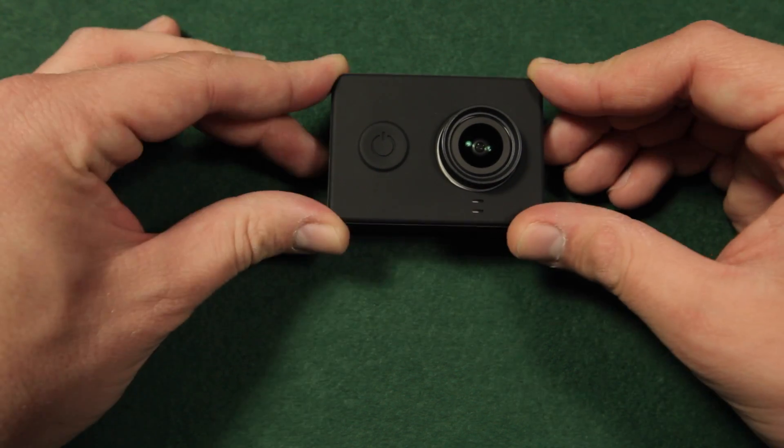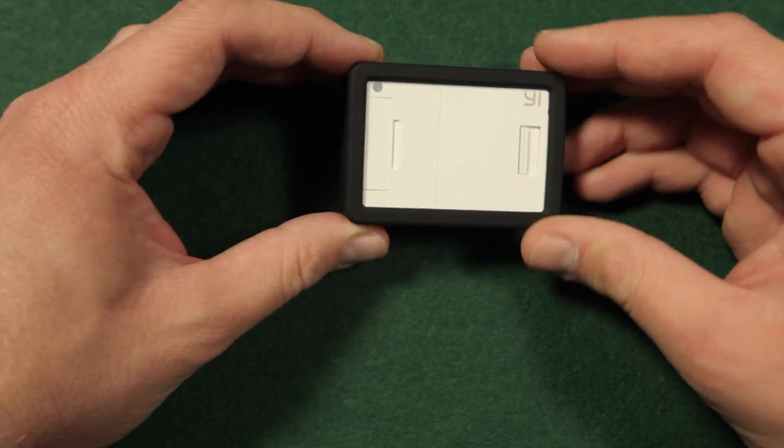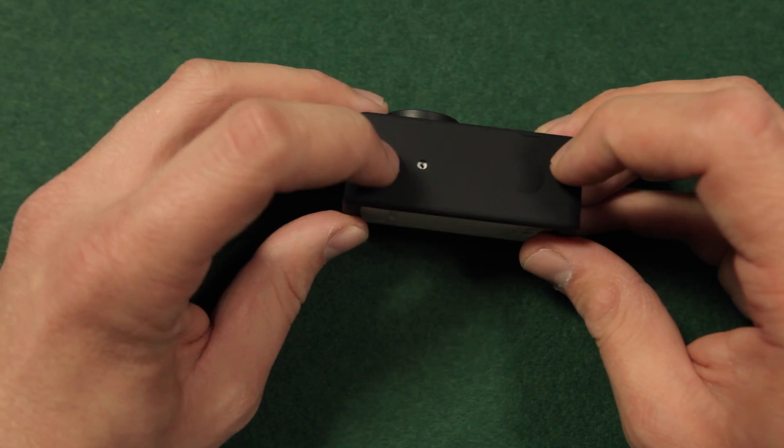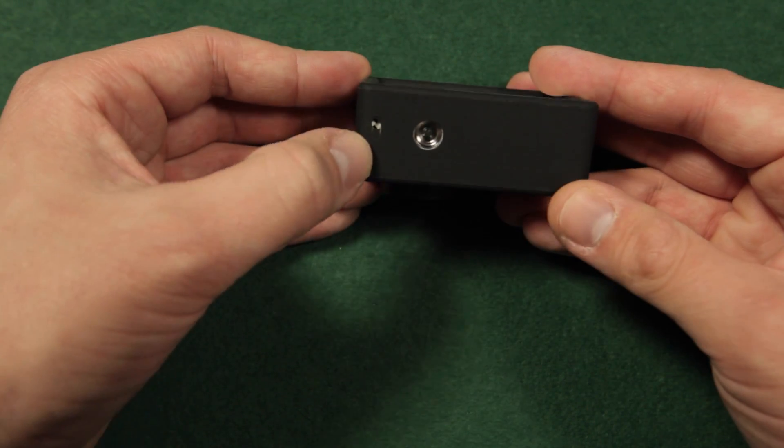The case fits perfectly on the camera's body. There are holes for the microphone, the speaker, and the quarter-inch screw.